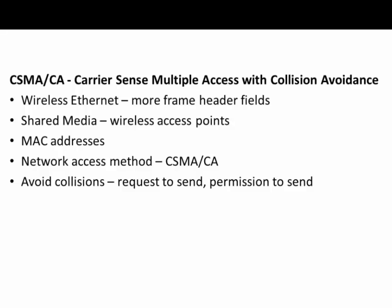CSMA/CA, or Carrier Sense Multiple Access with Collision Avoidance, is similar to CSMA/CD, with a couple of big exceptions. CSMA/CA is wireless Ethernet. Wireless Ethernet is characterized by having more frame header fields than a regular Ethernet frame. It also uses shared media, but this is a wireless media. So instead of a bus, hub, or switch, the devices that help connect devices together on the network are wireless access points.